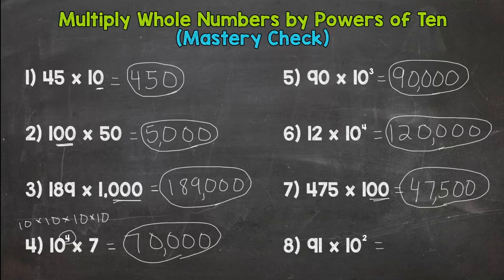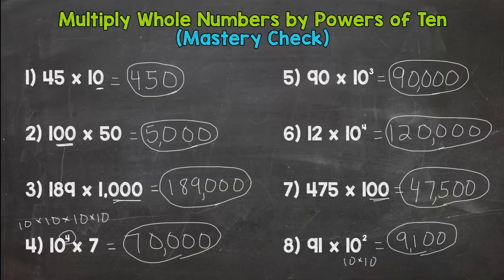And then lastly, 91 times 10 squared, or 10 to the second power, 10 times 10. This means 10 times 10, 9,100.